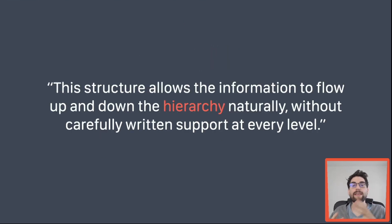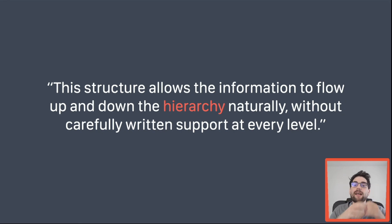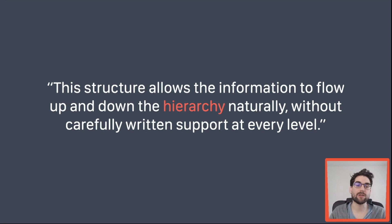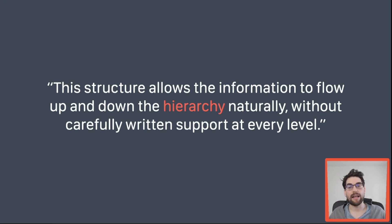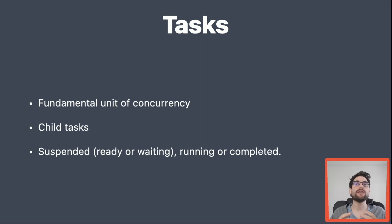In the same way that normal synchronous code forms a hierarchy, the same happens with structured concurrency. The hierarchy of functions calling other functions and coming back — all this is natural, arising from just the structure of our code. That means information can flow up and down without writing any specific code to do that at every level. Our program is a very well-defined hierarchy, even if the work is asynchronous. The system can pass contextual information down the hierarchy automatically — like priorities, and even custom values via the task locals Swift Evolution proposal.